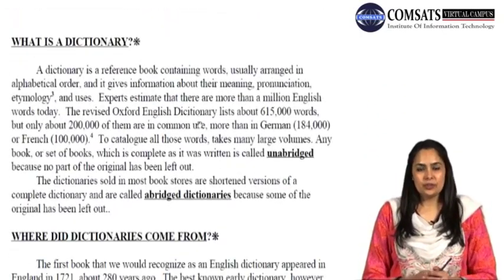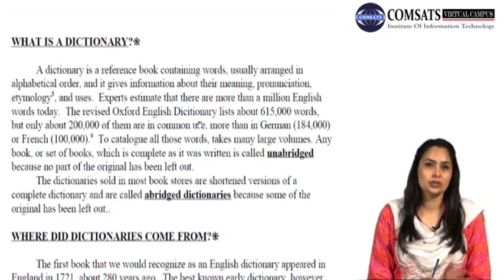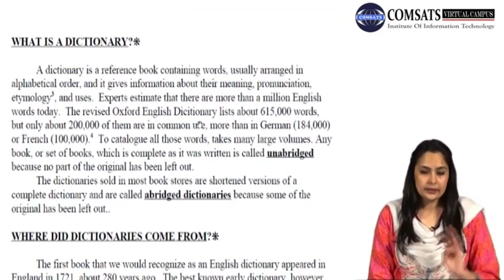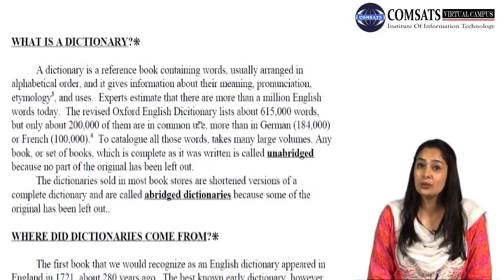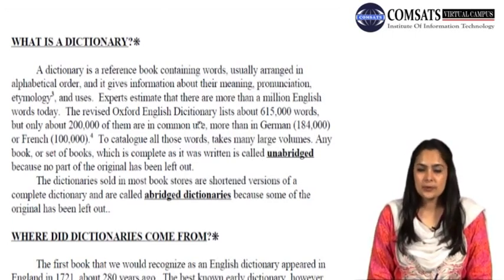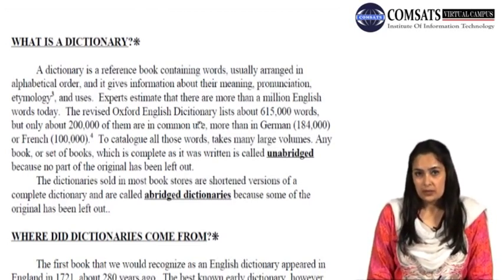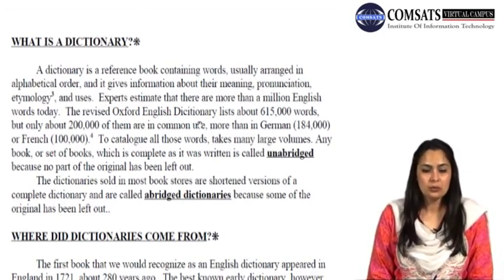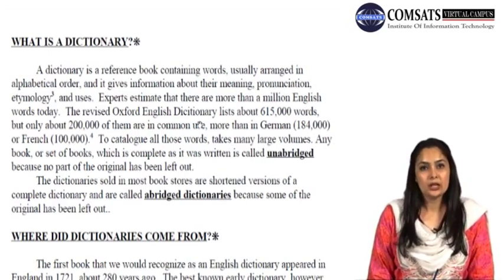What exactly is a dictionary? When somebody asks you this, you say a reference book that contains the meanings of words — but it's not just restricted to that. A dictionary is a reference book containing words usually arranged in alphabetical order, giving information about their meaning, pronunciation, etymology, and uses. Etymology refers to the origin of the word, from where the word was created. Experts estimate that there are more than a million English words today — more than this, since this research refers to data provided some time ago, so the present figure would be even higher.